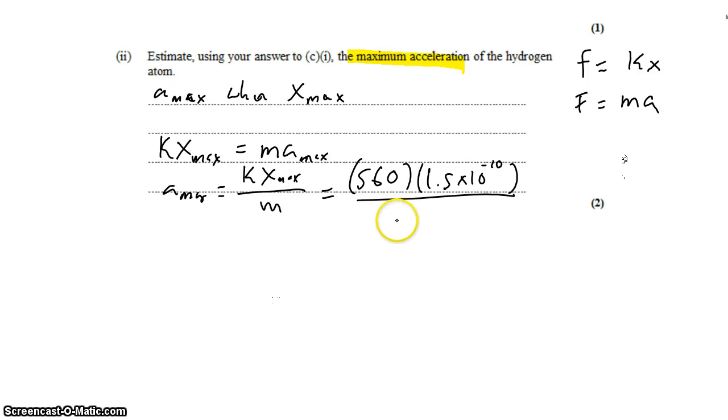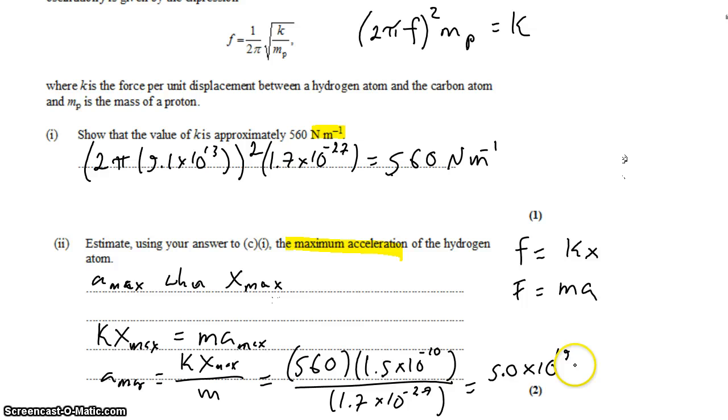We'll divide all of that by the mass of the hydrogen atom. And that gives us 5 times 10 to the 19 meters per second squared.